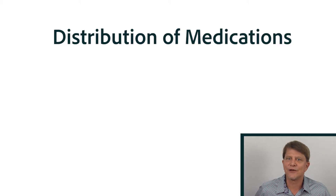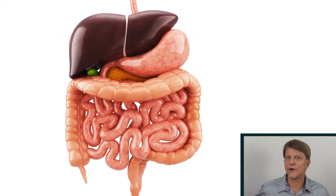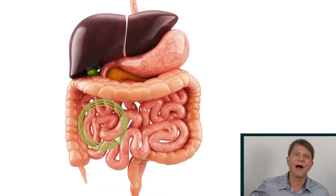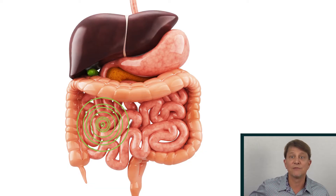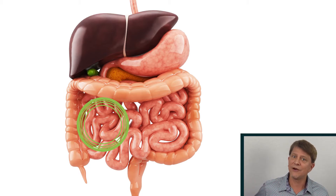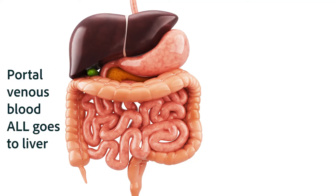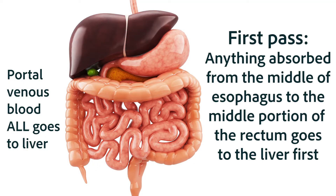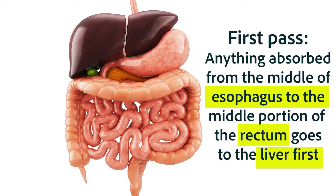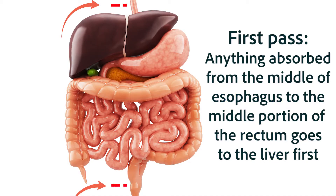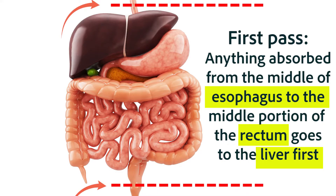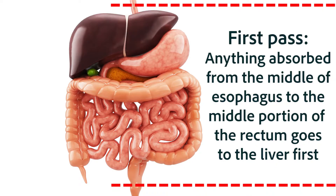We finished our last video as the orally consumed medication was going down to the microvilli of the small intestine and being absorbed there. From there it's going to go into the hepatic portal venous system. We'll discuss more of that when we talk about metabolism, but it's important to note that orally consumed medications will go through what we call the hepatic first pass mechanism — in other words, go through the liver before being distributed to other tissues or any other part of the body.